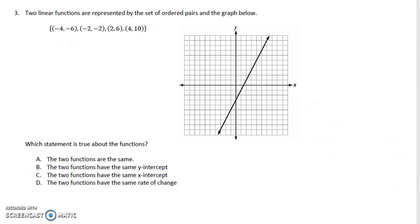This one says that we have two linear functions represented by ordered pairs. So this is one set of information, the other one is the other set of information. The question is asking which statement is true. Take a moment and try to figure out which statement is true.